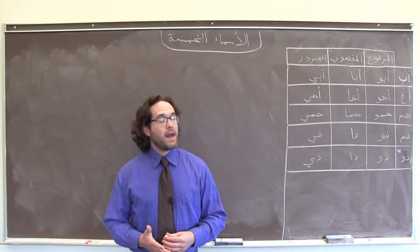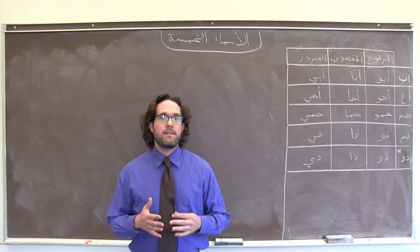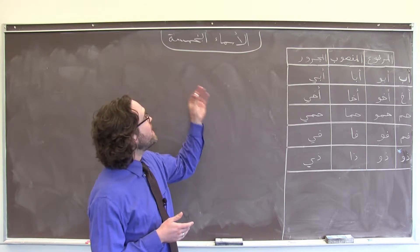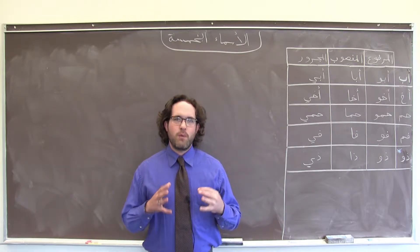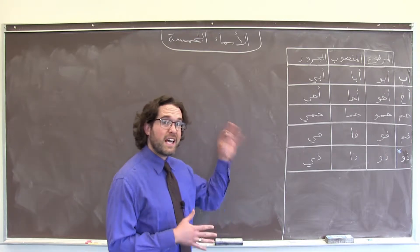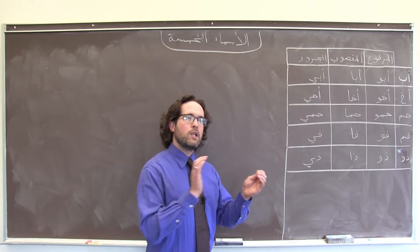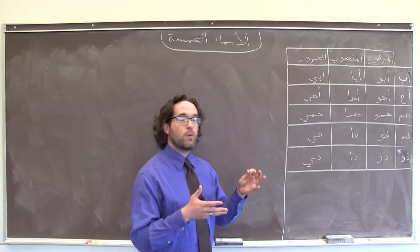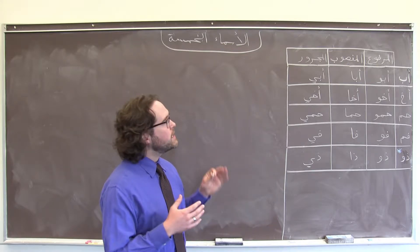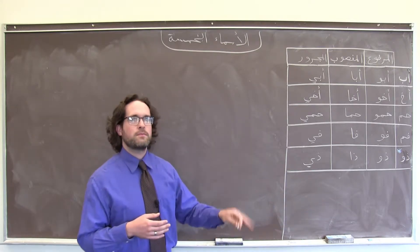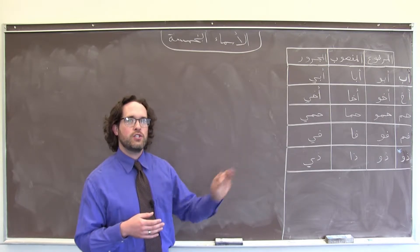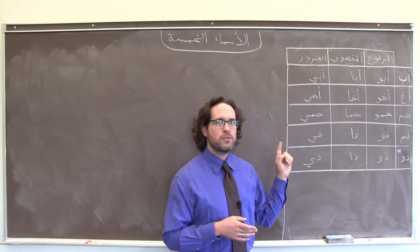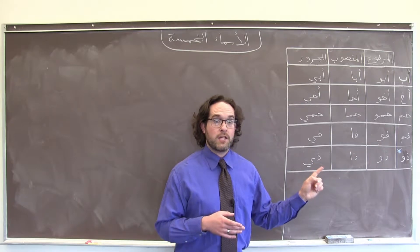Sabah al-kheer. Right now we're going to talk about the five names, or five nouns in Arabic, as they're called الأسماء الخمسة. This is a very small group of nouns that show their case endings in formal Arabic as long vowels attached to the end of the word when they're in an إضافة, or when they take most possessive pronoun suffixes. All of these nouns are singular, and this operation pretty much only happens in the singular, as we will see.